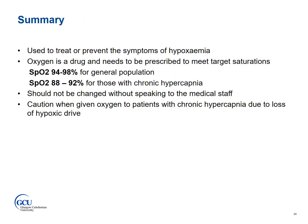In summary, oxygen is used to treat or prevent the symptoms of hypoxemia. Oxygen is a drug and needs to be prescribed in order to meet target saturations. Oxygen should not be changed without speaking to the medical staff. Caution needs to be given when treating patients with chronic hypercapnia and giving them increased levels of oxygen, due to the risk of loss of hypoxic drive.